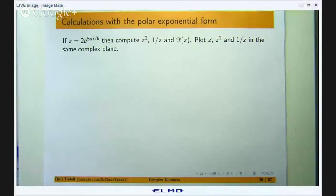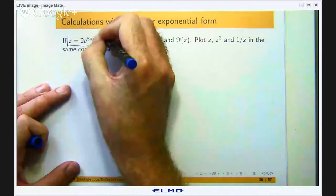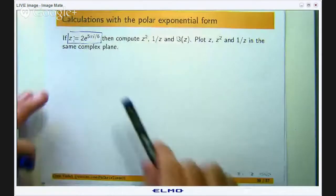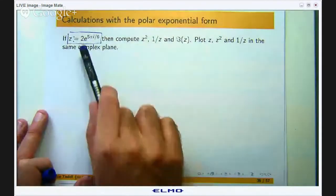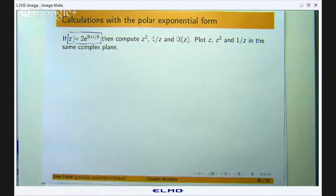Okay so this is the example that we are going to look at. I have got a complex number z defined by this polar exponential form. You have got a length to the origin, 2, and an angle to the positive real axis which is 5π/6.